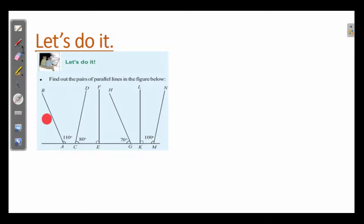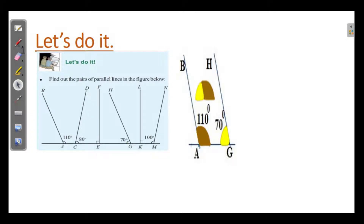The first line is AB. Which line is parallel to AB? It may be GH. Looking at these two lines, we can say that the co-interior angles are supplementary. Co-interior angles are supplementary here. So AB is parallel to GH.